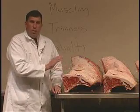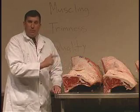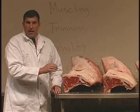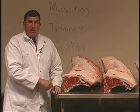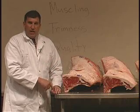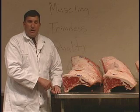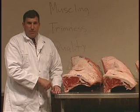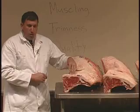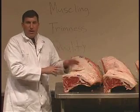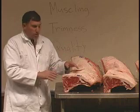So you determine quality first and decide which category it fits: prime, top choice, low choice, select, or standard. After that, the second thing you're going to do is determine a yield grade for that particular cut or carcass. In the loins, there are two factors from the yield grade equation that you can evaluate. In any cut class or wholesale carcass class, you assume all the cuts are the same weight — weight is constant.